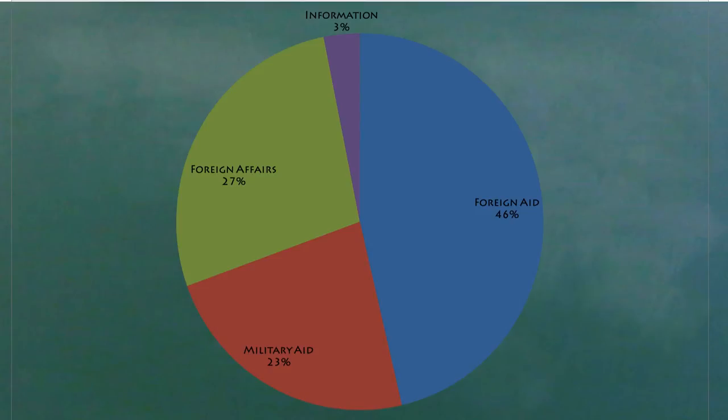Within the international affairs budget, $22 billion was spent on foreign aid, $11 billion on military or police aid, $13 billion on conducting foreign affairs, diplomacy and office supplies, and $1.5 billion on information exchange activities and creating media and news to highlight the United States.